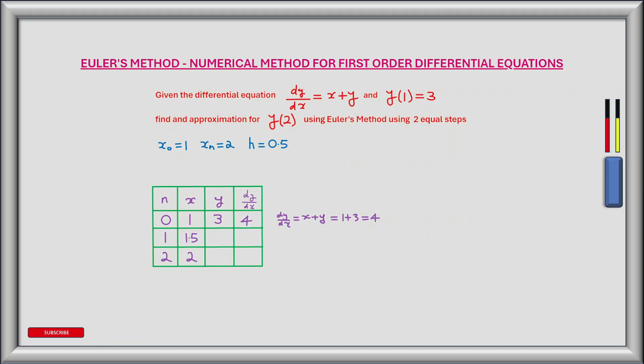Let's first calculate the derivative or dy/dx. Now we know that dy/dx equals x plus y, and we know what x and y are because they're the initial conditions. So x is 1 and y is 3 at the initial conditions. So dy/dx equals 4.